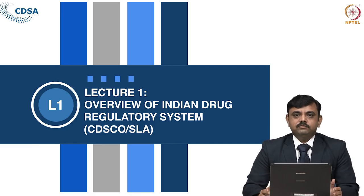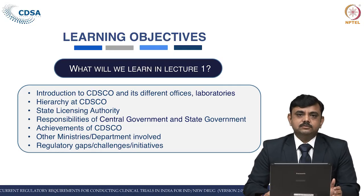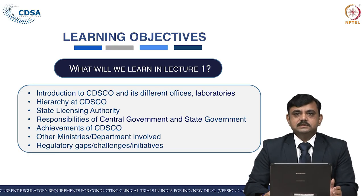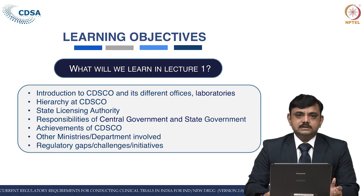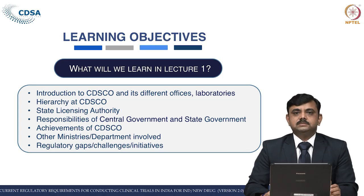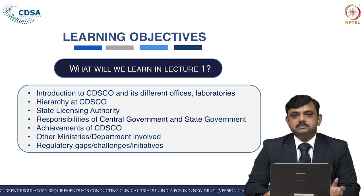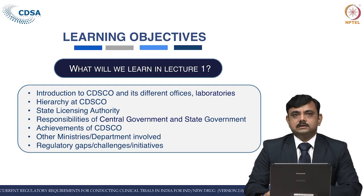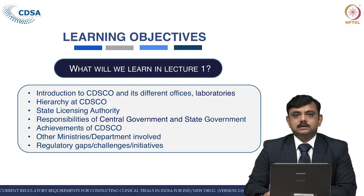The first lecture is regarding an overview of the Indian drug regulatory systems, that is CDSCO and the state licensing authority. The learning objective and expected outcome is that learners will be able to comprehend about CDSCO and its different offices, laboratories of CDSCO and the central government, hierarchy at CDSCO, state licensing authority, responsibilities of central and state governments, other ministries involved in regulatory processes for biologicals, and the gaps, challenges, achievements and initiatives of the regulatory system.